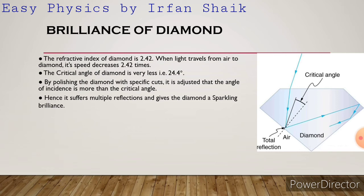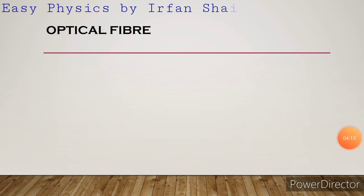By polishing the diamond with specific cuts, it is adjusted so that the angle of incidence is more than the critical angle. When the angle of incidence exceeds the critical angle, total internal reflection takes place. Hence light suffers multiple reflections, giving the diamond a sparkling brilliance. That is why a diamond shines when a light ray falls on it.